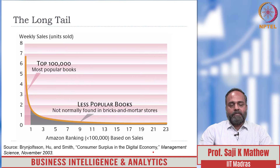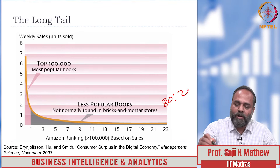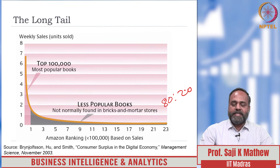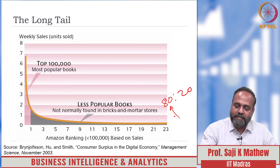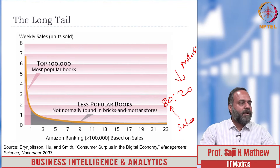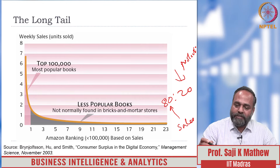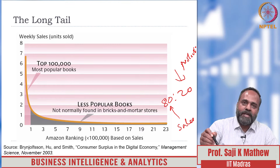The long tail is a specific phenomenon where researchers and analysts observed from online sales data that online sales follow a different pattern from the 80-20 principle, or the Pareto principle. The Pareto principle generally states that 80% of sales come from 20% of products. But online sales, as observed in this data, do not follow the 80-20 principle — instead they follow a long tail principle.